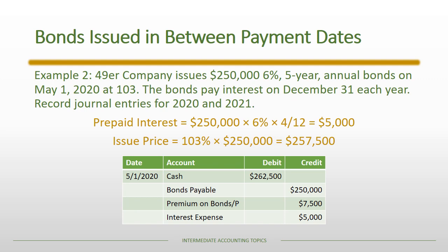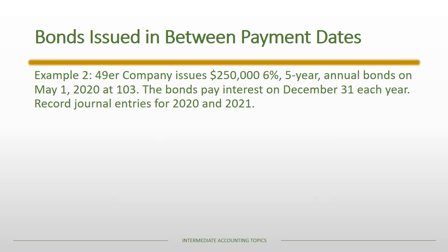The total journal entry shows the interest expense as that prepaid interest of $5,000, the par value of the bonds, the premium on bonds payable, and of course the total amount of cash raised at issuance — $262,500.